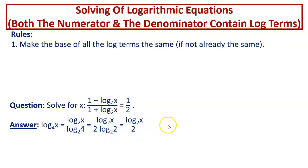Therefore, our given equation becomes 1 minus log of x to the base 2 over 2 divided by 1 plus log of x to the base 2 equal to half.